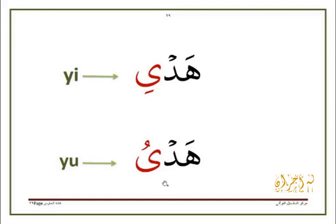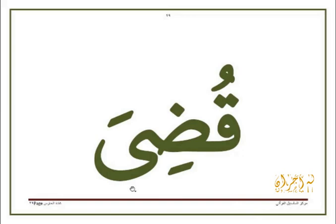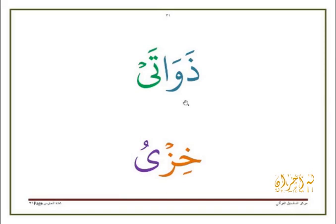For this word: قُضِيَ. In this example, the letter يَ has a سُكُون, therefore this last syllable is تَيْ: ذَوَاتَيْ.